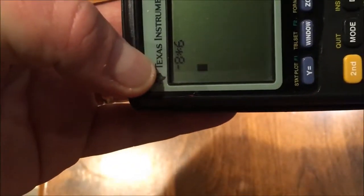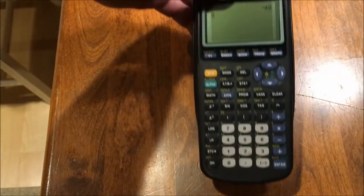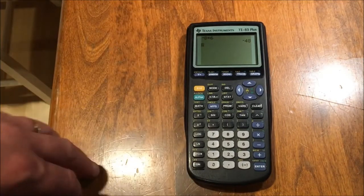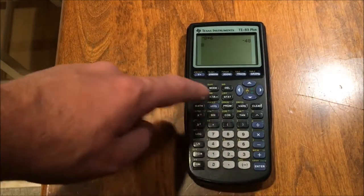If I press the second button, that goes away. If I press the second button again, it comes back. This is how you activate all the yellow features above each button. So if I press second enter, I get my previous entry and I can move the cursor over and edit what I need to edit.